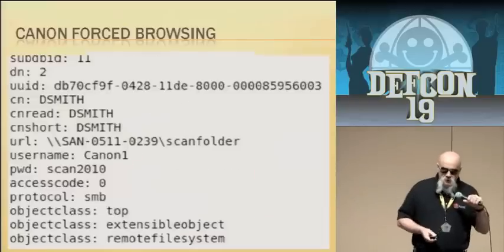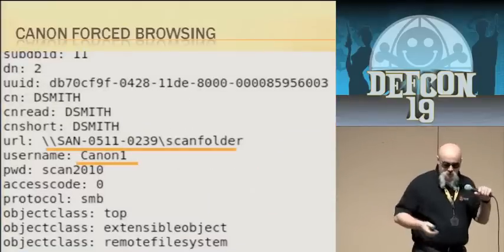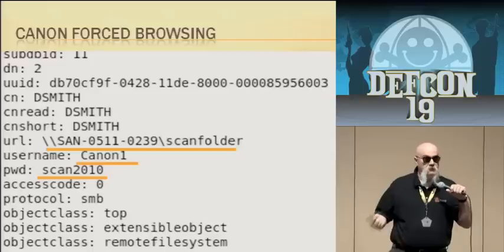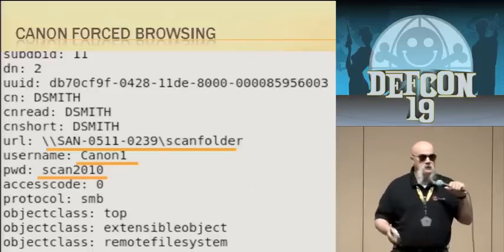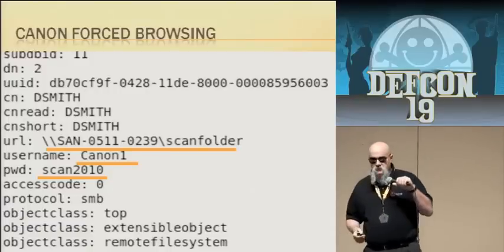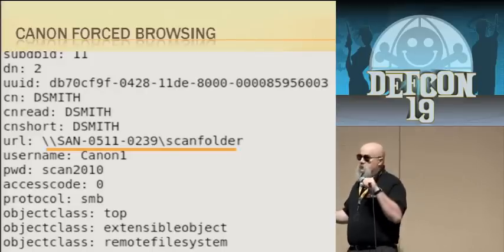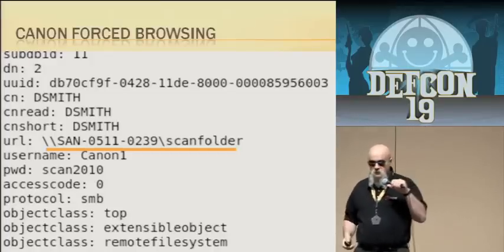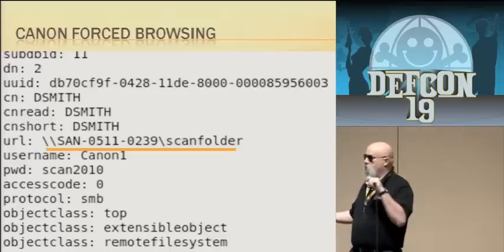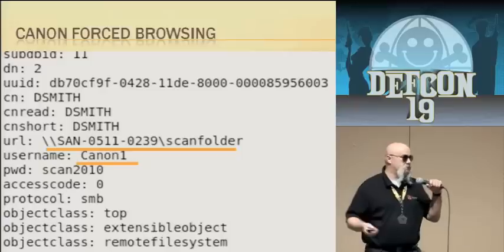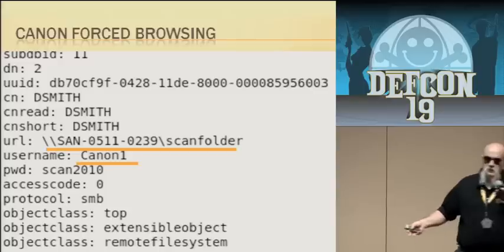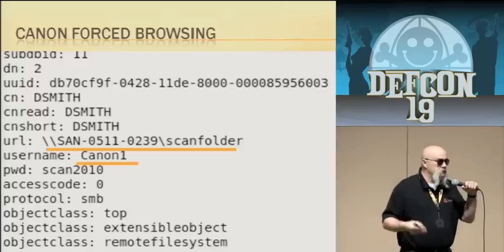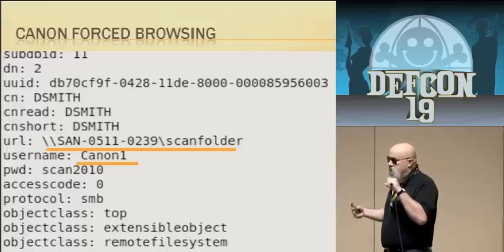Pulling the address book reveals a URL, username, and password. The device is configured so D. Smith can authenticate and do a scan job that saves to his workstation — I've also seen these point to actual file servers. Now you have the password to his workstation. If the Canon username was created as an administrator on his local workstation, you're admin on his machine. You can then extract password hashes — particularly the administrator account — and use them to break into every other machine on the network with the same administrator password.